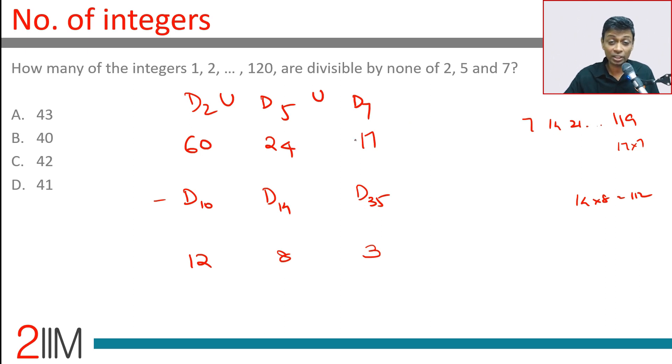12 plus 8 is 20. 20 plus 3 is 23. From 101 we will subtract 23. We need to add the intersection of all three—D2 intersection D5 intersection D7. The number of multiples of 2, 5, and 7, or numbers divisible by 70, which is exactly one number.